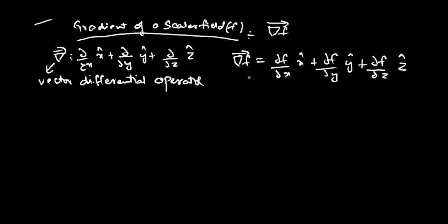Interestingly, you can note that the gradient of a scalar field gives a vector field. If you apply gradient to a scalar field, the resultant is not a scalar field but a vector field. That means the resultant of the gradient of a scalar field has both magnitude and direction.